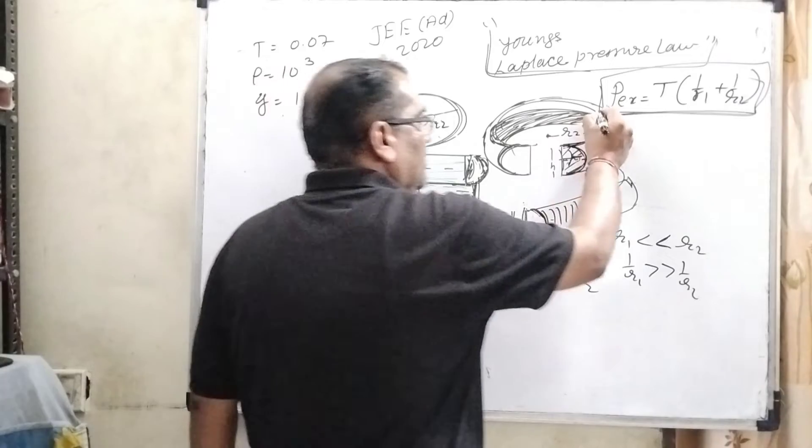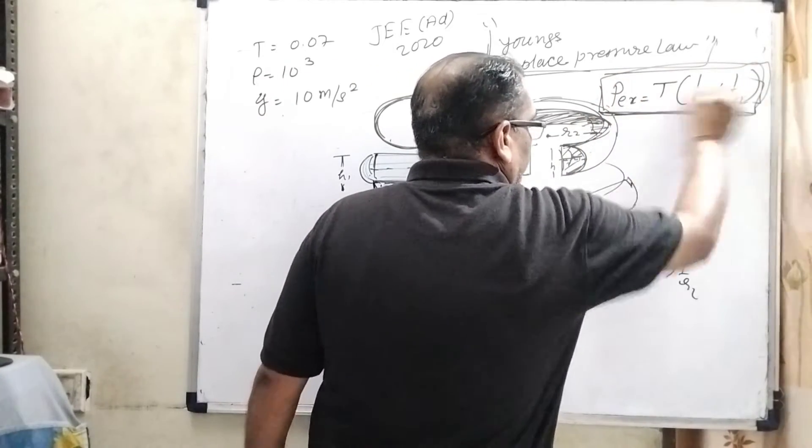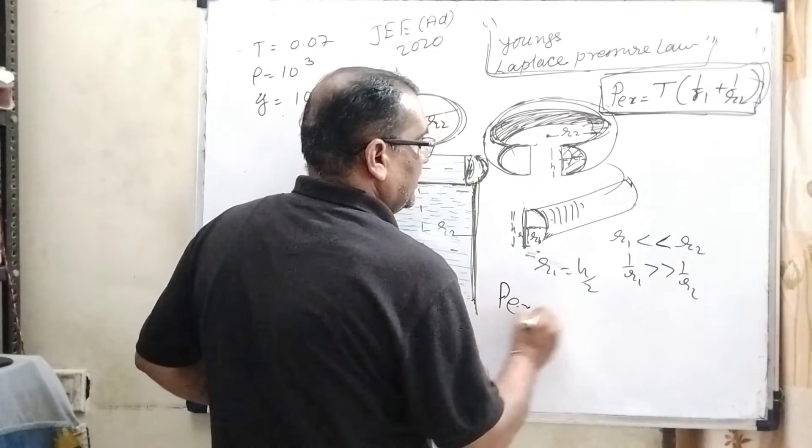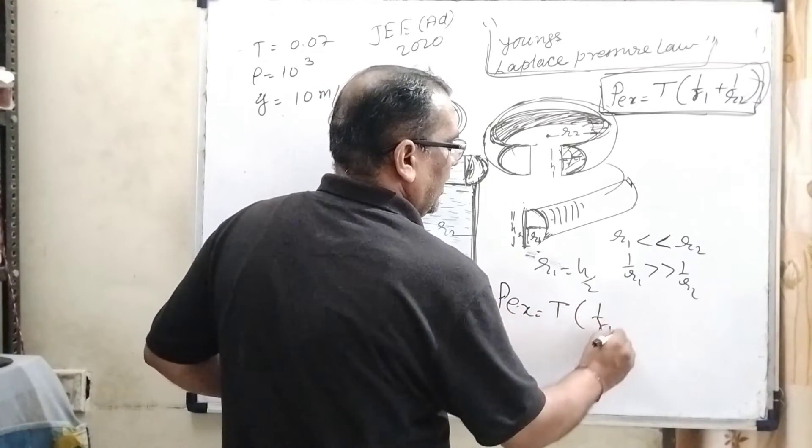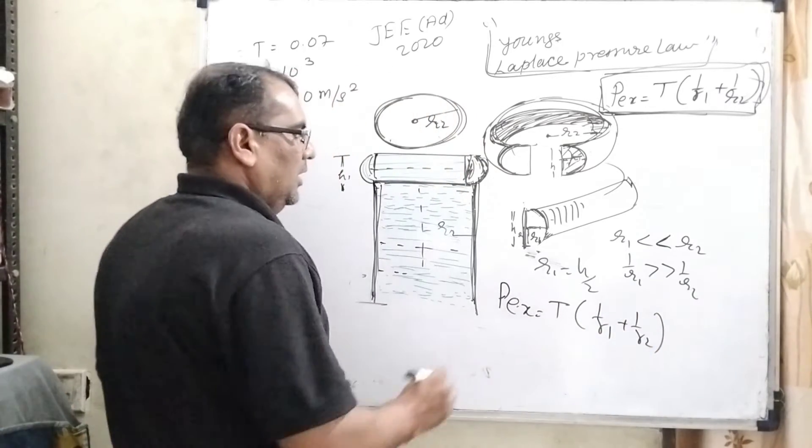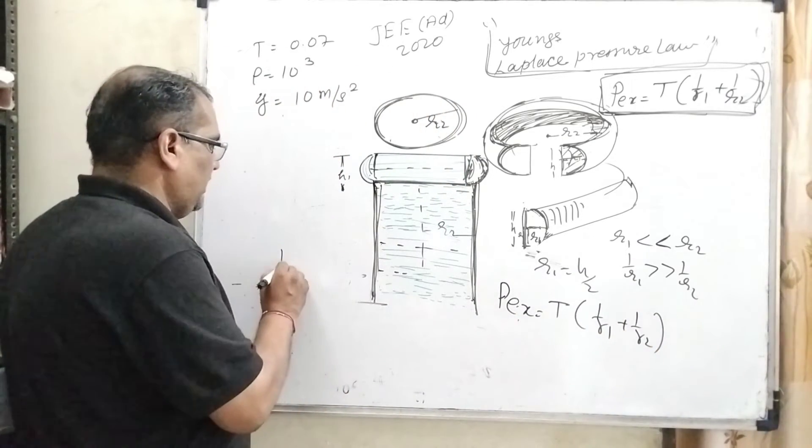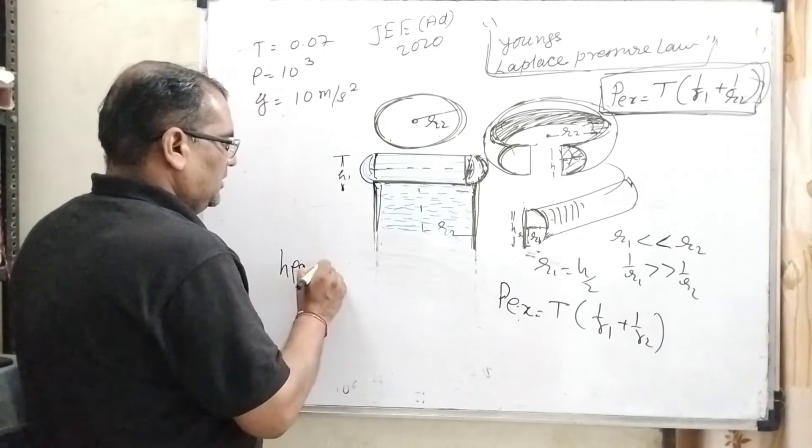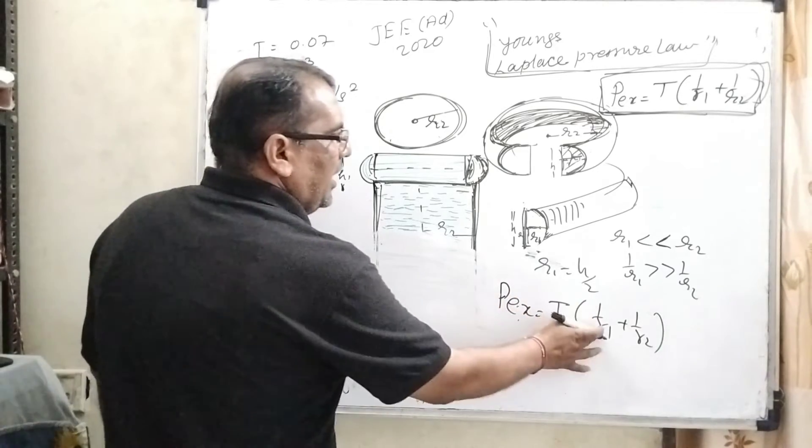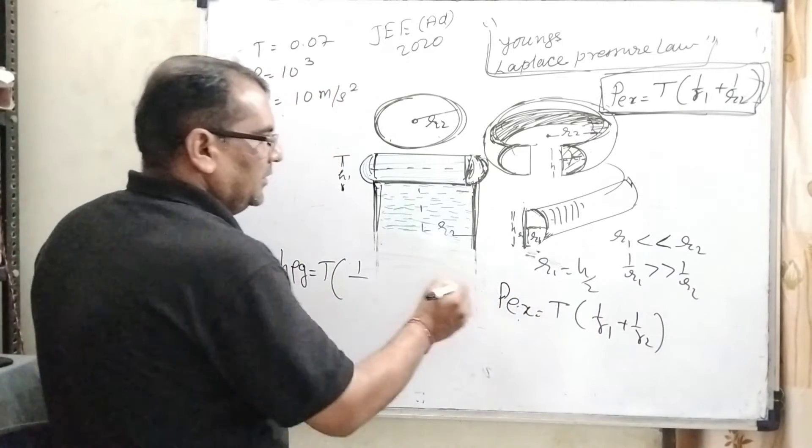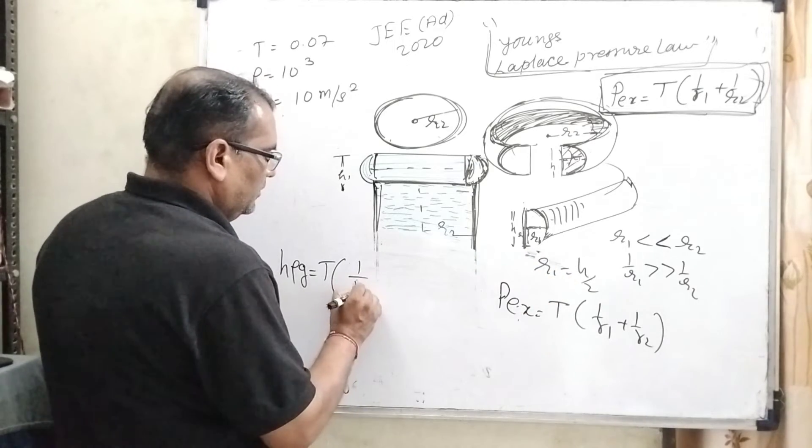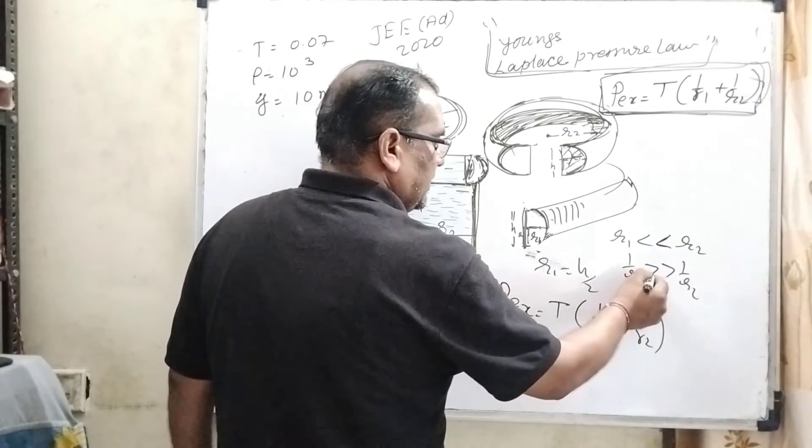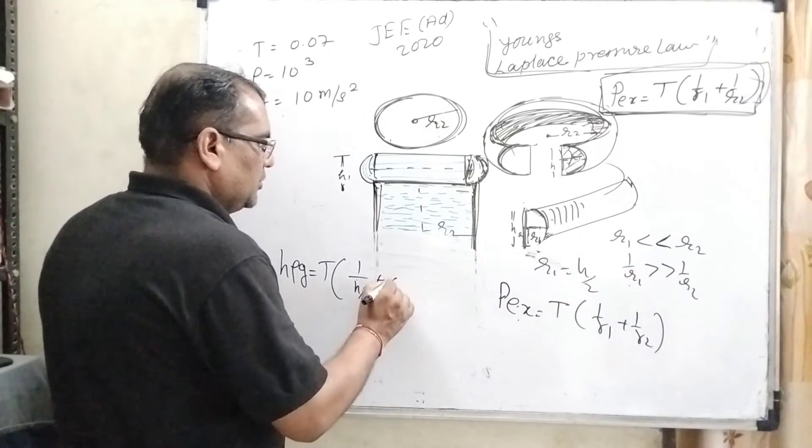So now using this Young's Laplace formula, excess pressure is T (surface tension) times (1/r1 + 1/r2). Here, excess pressure, you know that h·ρ·g equals surface tension T times 1/r1. What is r1? Here r1 is h/2, and 1/r2 can be neglected because 1/r1 is greater than 1/r2, so therefore becomes 0.